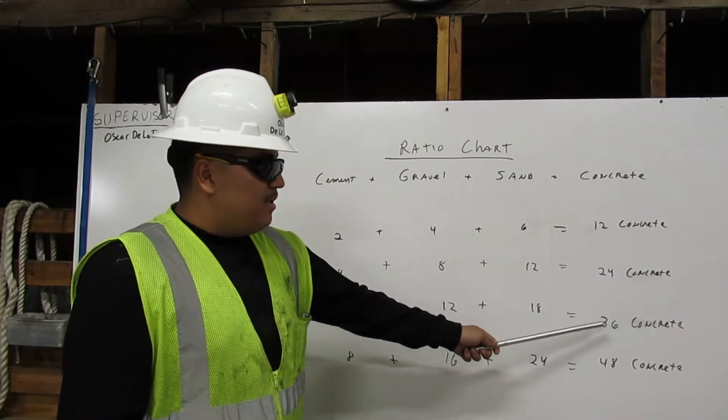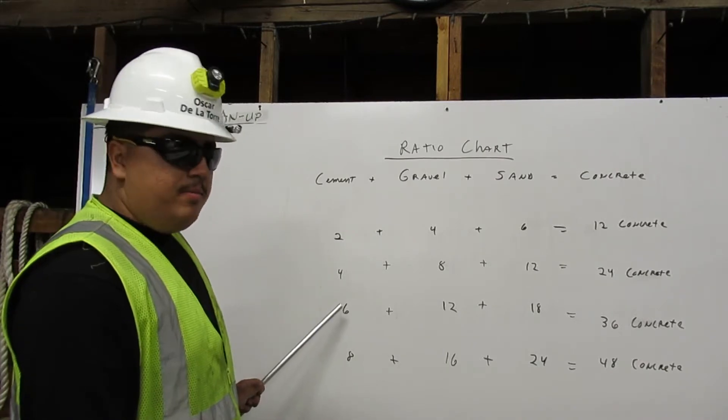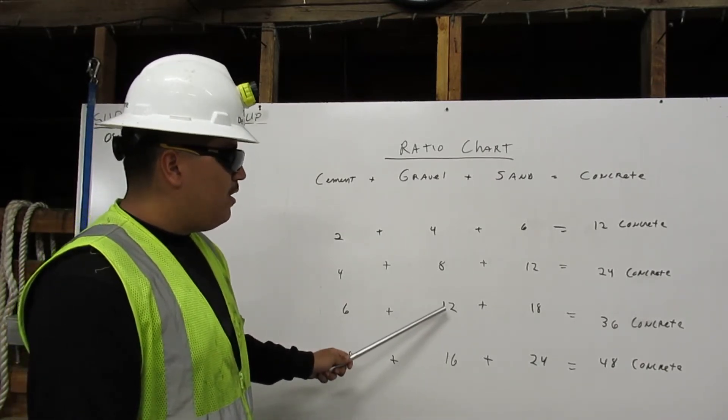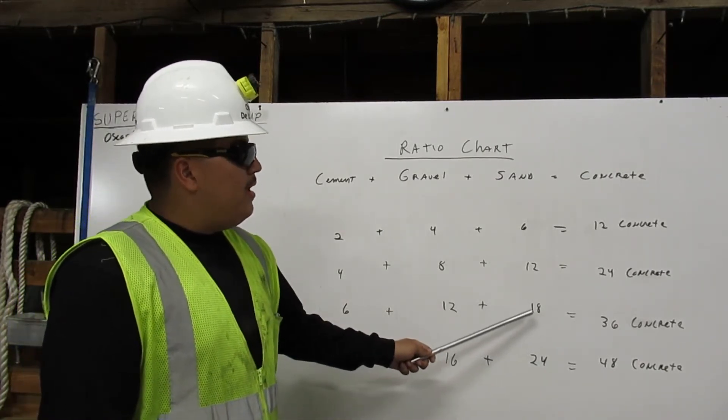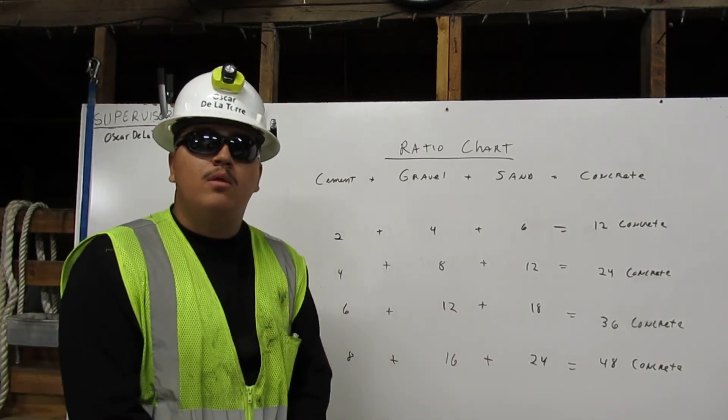To get 36 cubic yards of concrete, we're going to mix and use 6 cubic yards of cement with 12 cubic yards of gravel with 18 cubic yards of sand. That's how you get 36 cubic yards of concrete. Thank you.